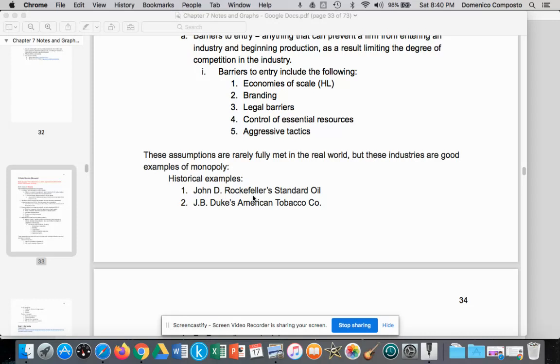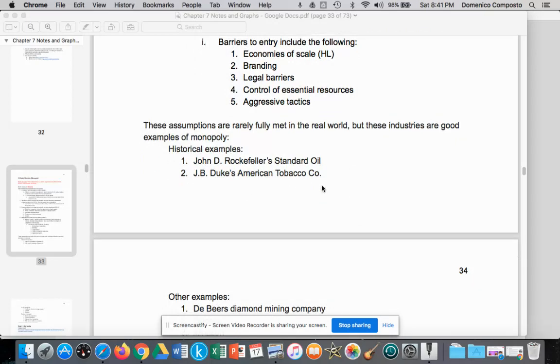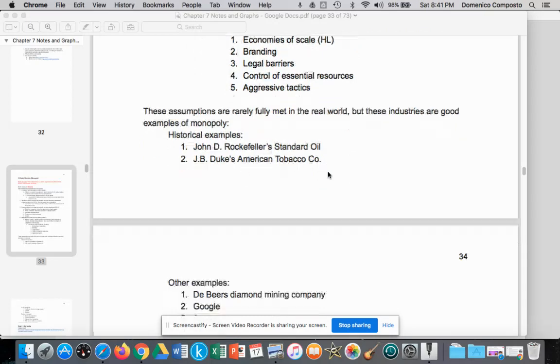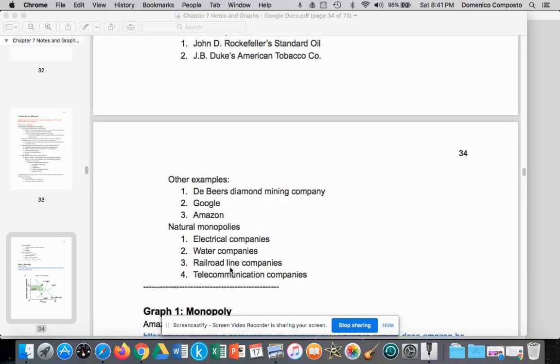Another example is American Tobacco Company. Some other examples: De Beers as I mentioned, Google, Amazon. In another video, I'll talk about these natural monopoly examples—electrical companies, water companies, railroad lines, telecommunications—where it makes sense that one firm is providing for the entire market.